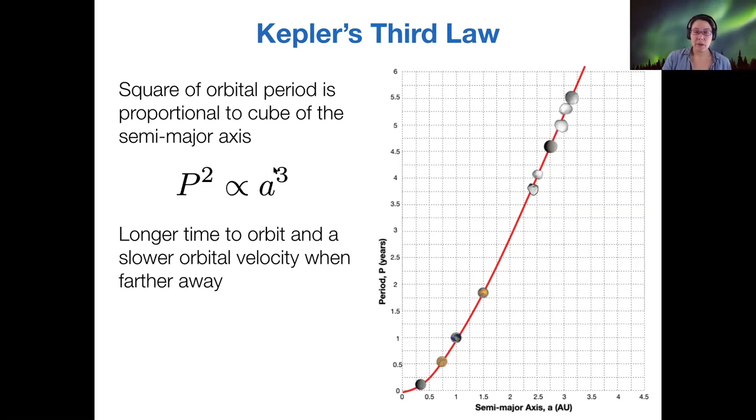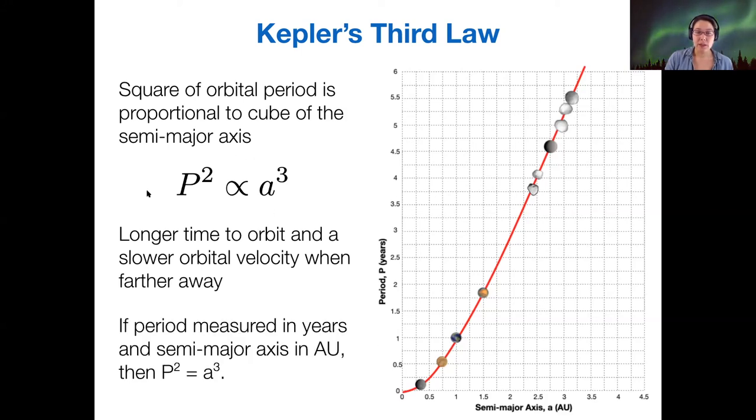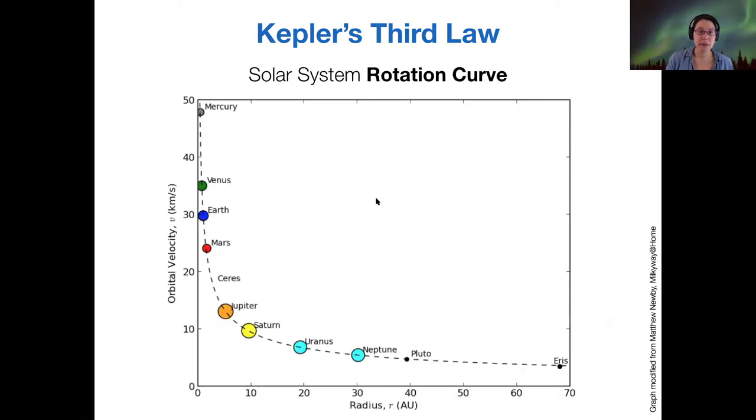Kepler's third law, again: the orbital period squared is proportional to the semi-major axis cubed, meaning that objects with a longer semi-major axis have a slower orbital velocity. This equation is exact as long as you're measuring the period in years and the semi-major axis in AU. For our planets in the solar system, that's what makes this equation exact.